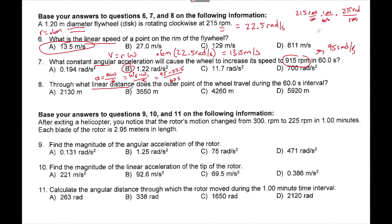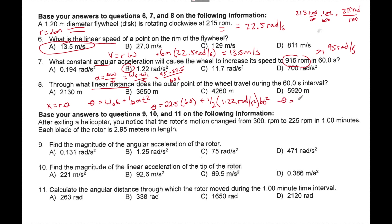Number eight asks for linear distance, so we need x equals r times theta, but first we need theta. Theta equals omega naught t plus one-half alpha t squared: 22.5 times 60 seconds plus one-half times 1.22 rads per second squared times 60 squared. Theta comes to 3,546 radians. Multiplying by r of 0.6 meters gives linear distance of approximately 2,128 meters.